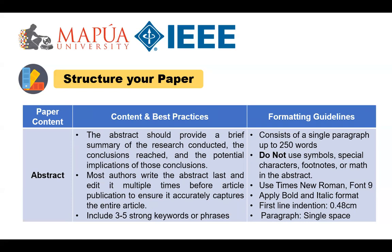For the abstract, one of the most important components of the paper: to have a powerful abstract, it must be self-contained — without abbreviations, footnotes, references, mathematical equations, or tables. Highlight what is novel in your work, and use strong keywords or phrases that describe the research to help readers find your article.